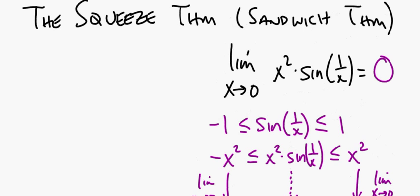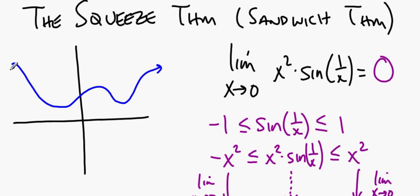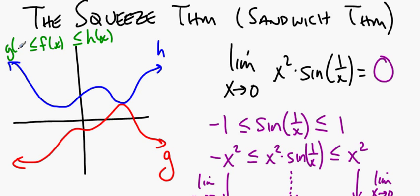In a more general way, if I have three functions, if I have some h of x, and I have some g of x, and I know that f of x is trapped between h of x and g of x, it lives somewhere in here. If h goes to L as x approaches c, and g goes to L as x approaches c, then f, no matter where it lives and what it tries to do, is going to have to go to L as x approaches c. That's the idea behind the sandwich theorem, or the squeeze theorem.